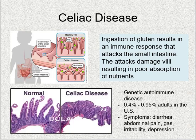Celiac disease is a fairly rare genetic autoimmune disease affecting about 0.4 to 0.95% of adults in the U.S. If you have celiac disease, you're incapable of ingesting gluten, because ingestion of gluten results in an autoimmune response that attacks the small intestine. These attacks damage the microvilli responsible for absorption. Celiac disease can cause a wide variety of uncomfortable symptoms including diarrhea, abdominal pain, and gas.